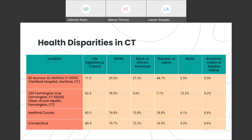Now let's talk about some specific health disparities in our state that are results of many of these previously mentioned social determinants. One of these disparities is life expectancy, which is a result of factors such as food insecurity, healthcare accessibility, zip code, pollution, and education — all key social determinants that Lena and Lauren previously touched upon. On the left-hand side, we see four different areas or general locations: Seymour Street in Hartford, which is the address of Hartford Hospital; Farmington Avenue in Farmington, Connecticut, which is near the UConn Health campus; the general Hartford County; and the state of Connecticut.